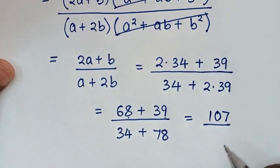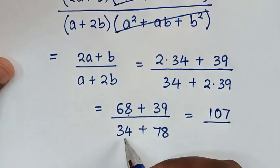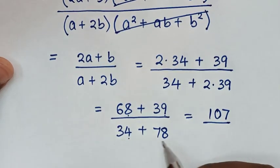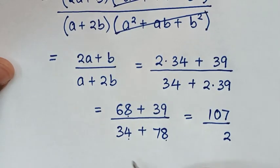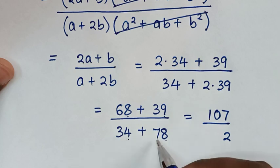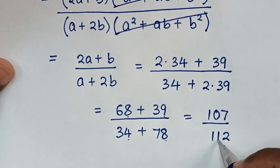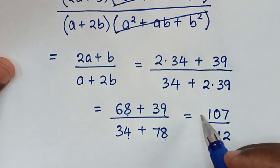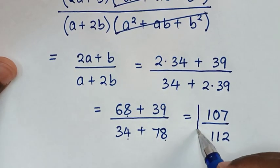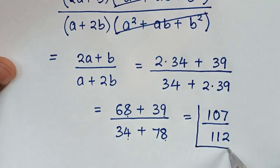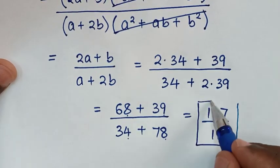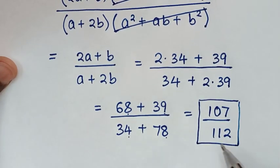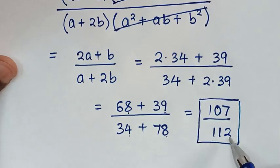Then, over. Here, 4 plus 8 is 12. Go with 1. 3 plus 7 is 10, plus 1 is 11. Therefore, this is our final answer: 107 over 112.